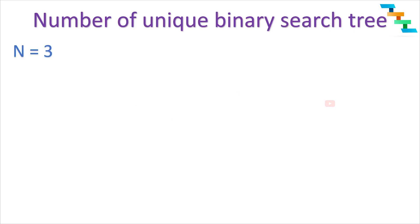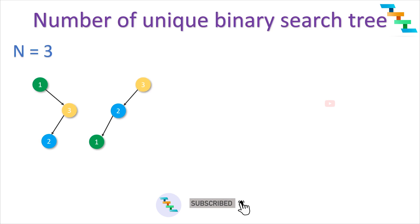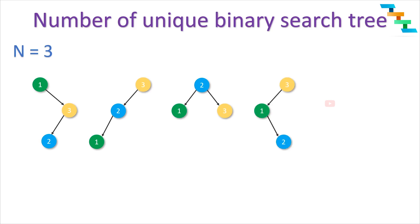For 3 nodes, we will explore all unique binary search trees when n is 3. With root node 1, the right subtree has nodes 2 and 3, giving one variant with 3 as right subtree root and 2 as its left child. With 3 as root node, 2 is its left child and 1 is the left child of 2. With 2 as root node, 1 is the left child and 3 is the right child. With 3 as root node, 1 is the left child with 2 as its right child. Finally, root 1 with 2 as right child and 3 as right child of 2. So for n equals 3 we can form 5 unique binary search trees.